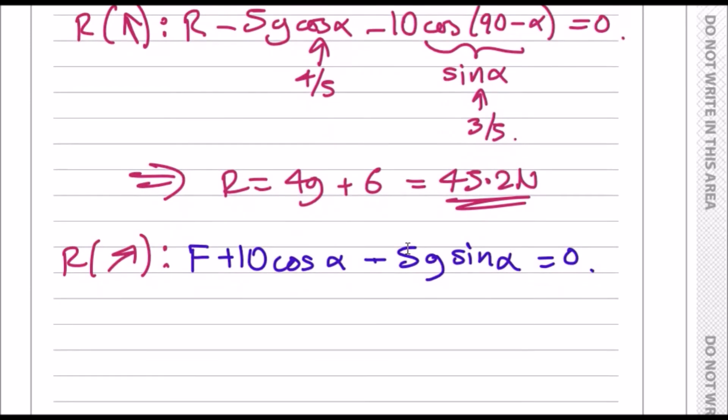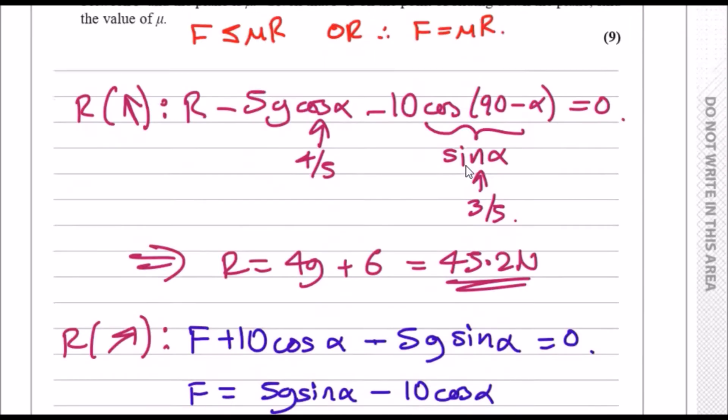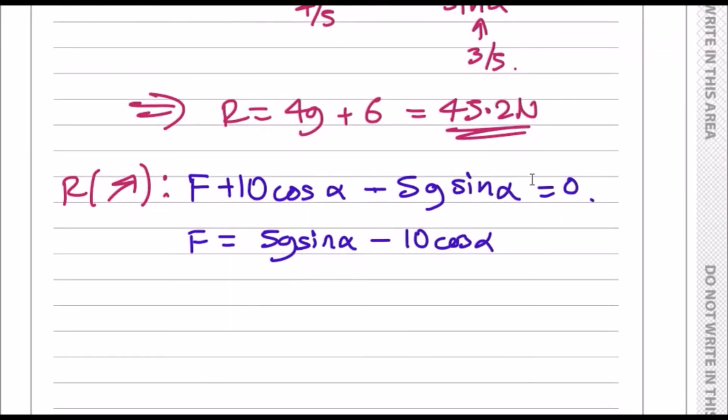Now just make F the subject here. We're going to have F equals 5g sin α minus 10 cos α. F is μR, and we know R is 45.2, so 45.2μ equals all of these. So 5g—we can just smash this in the calculator—and I got 21.4 newtons. Now finally, just dividing by 45.2, you should get 0.473 for the coefficient of friction.